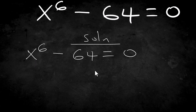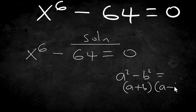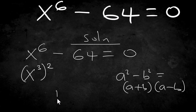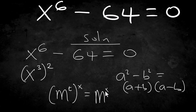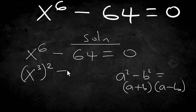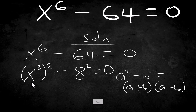We can get the difference of two squares here. Remember, a squared minus b squared is the same as (a plus b)(a minus b). We can write x⁶ as (x³)², and write 64 as 8 squared, because 8 squared is 64.